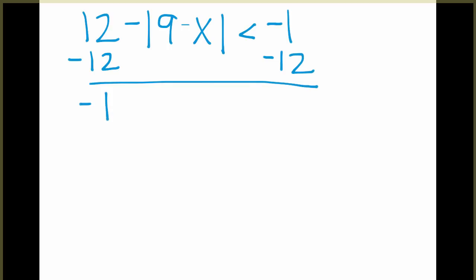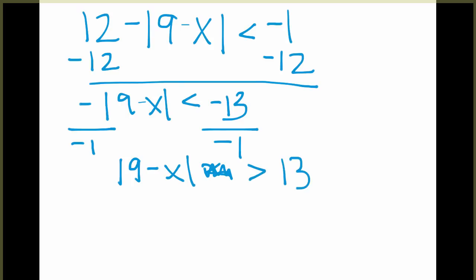So first, here I'll subtract 12, and then I have to get rid of this negative sign in front of the absolute value. I can't distribute it, and so I would end with the absolute value of 9 minus x is not less than, and since I divided by a negative 1, I'm going to flip it and make it greater than 13.